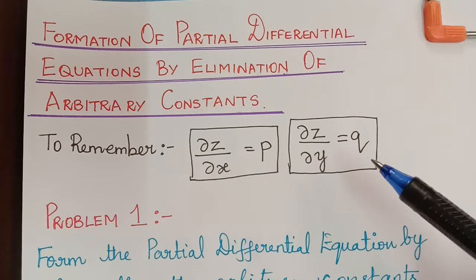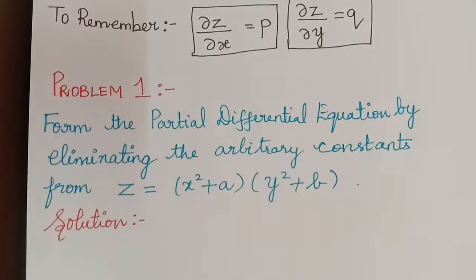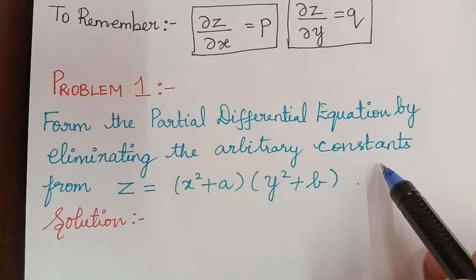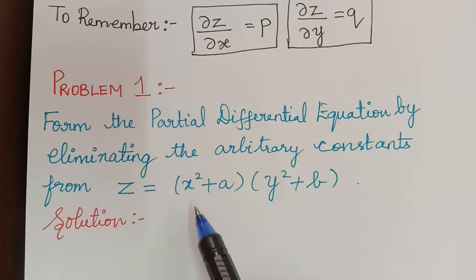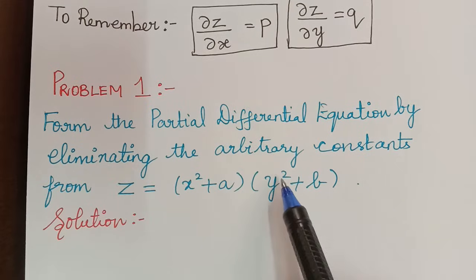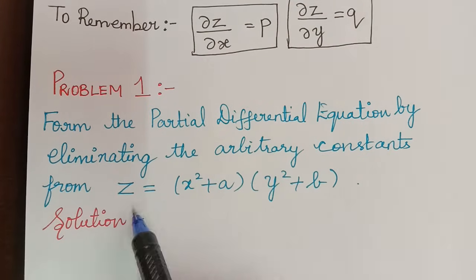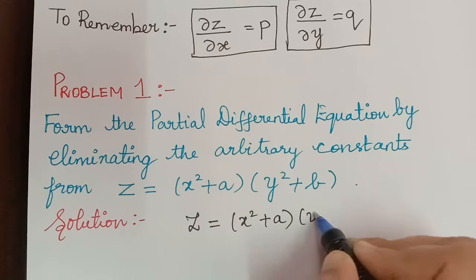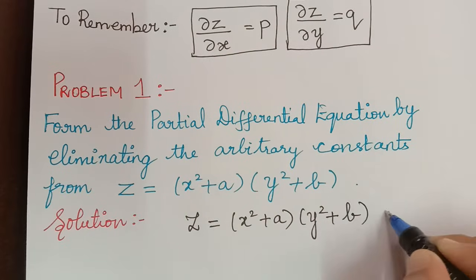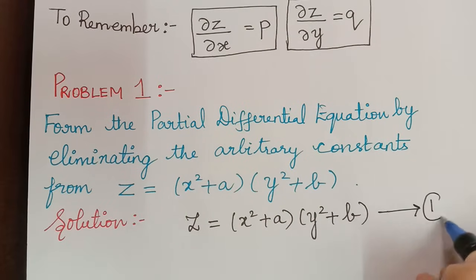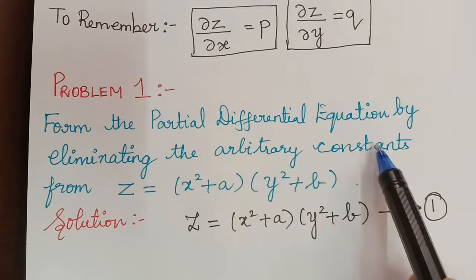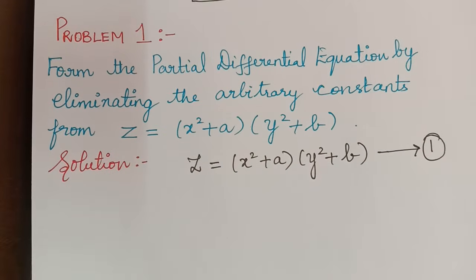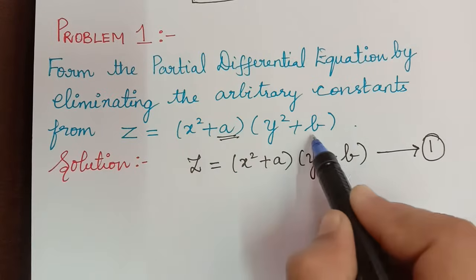We shall solve a problem on this. The first question is: form the partial differential equation by eliminating the arbitrary constants from z = (x² + a)(y² + b). Let this be equation 1. We have to eliminate the constants a and b from this given equation and form a new equation.